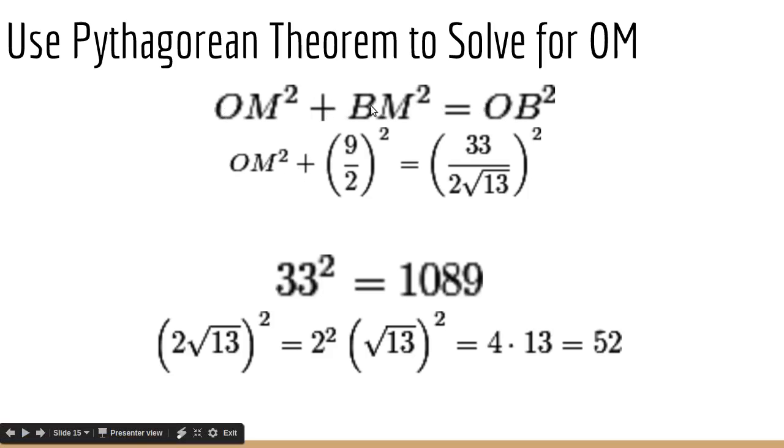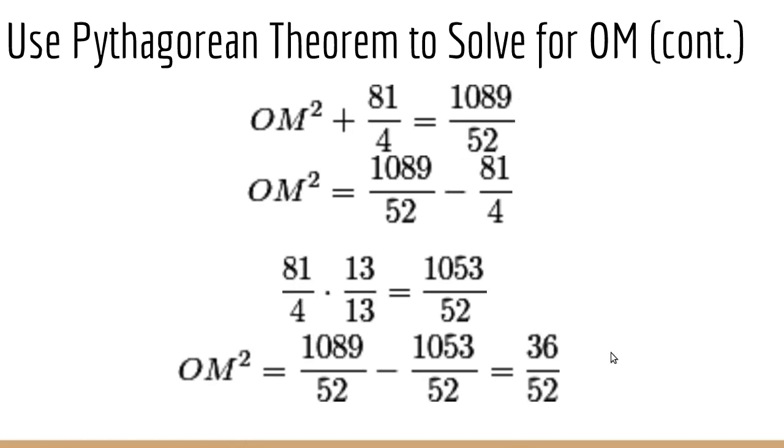So OM squared plus BM squared equals OB squared. OM squared plus 9 halves squared equals 33 over 2 square root 13 squared. And then the squaring this is kind of complicated, so I've done it in parts. 33 squared is 1089. You can just do that on paper. Multiply that out. And then 2 square root 13 squared. This is where you have to be careful, because you might think, oh, that's just 2 times 13. But it's actually 2 squared times 13, which is 4 times 13, which is 52. So make sure you don't get a mistake there. And then 9 halves squared is 81 fourths, obviously.